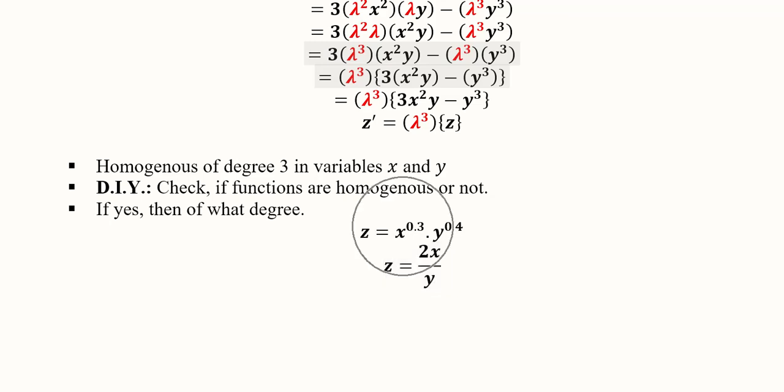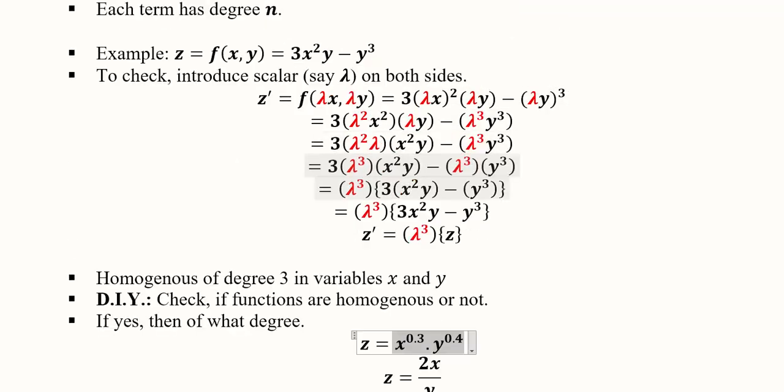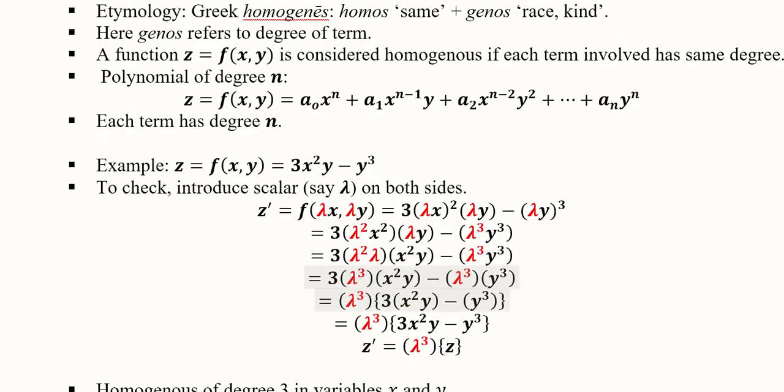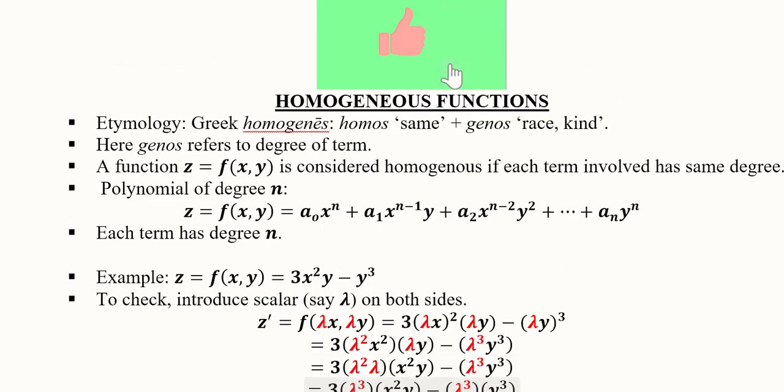Here you will introduce lambda here and here, and lambda will be included in this power and in this power as well. Here lambda will be introduced and here it will be introduced. It will be very interesting to solve because lambda here and lambda there will be cancelled out, and lambda will have the power of 0. So it will be homogeneous of degree 0. You can also experiment with this function as well.